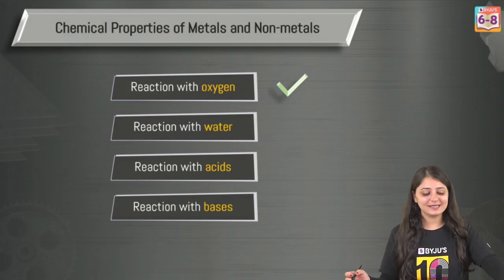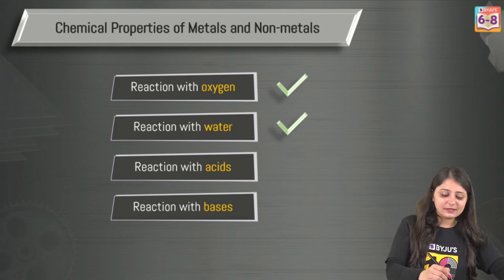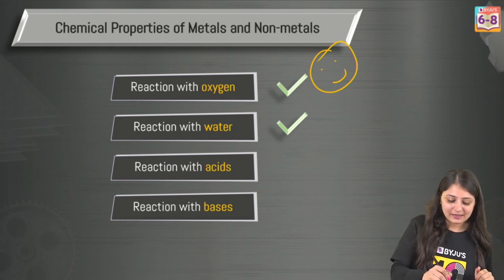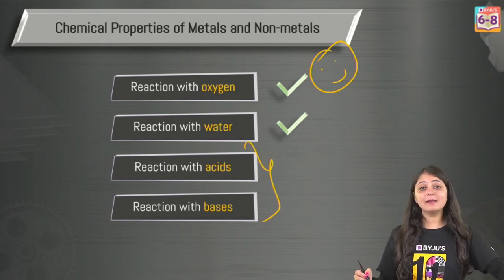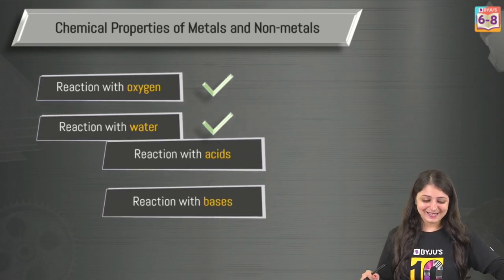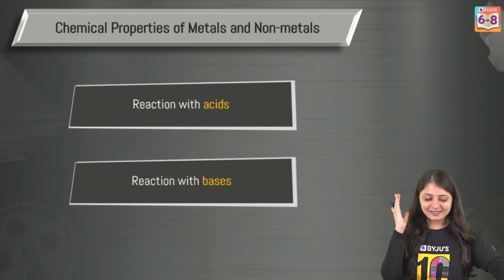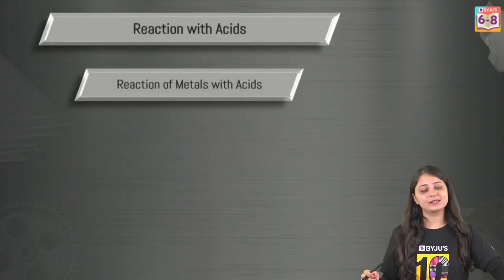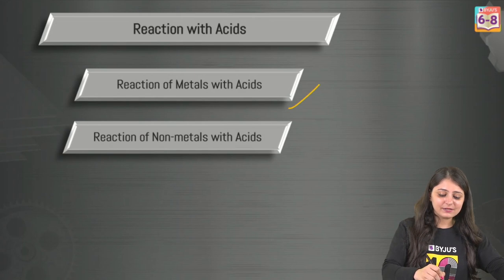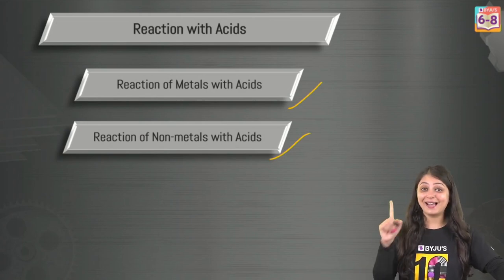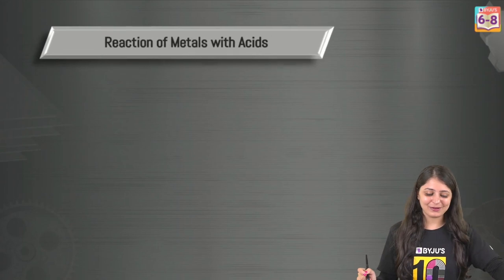In the last class, we covered the reactions with oxygen and water — we've mastered this. Now what's left is how metals and non-metals actually react with acids and bases. So let's get started with these two subtopics: reaction of metals with acids and reaction of non-metals with acids.